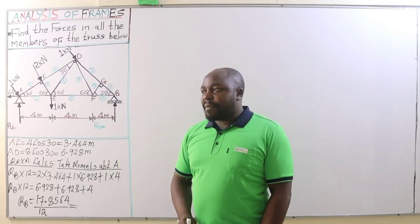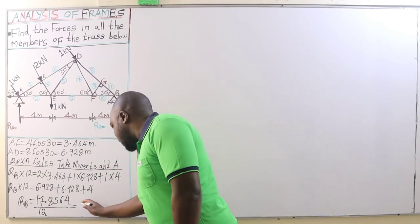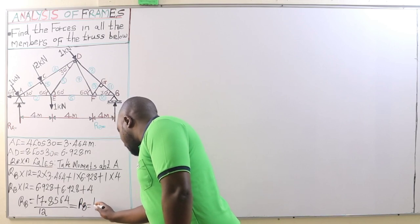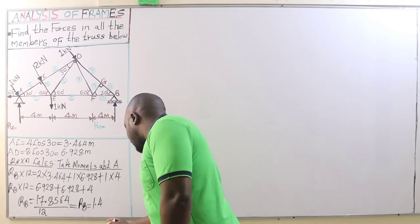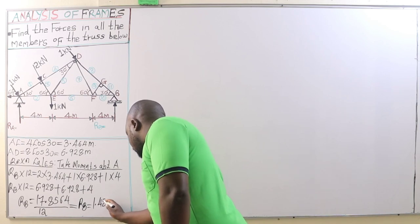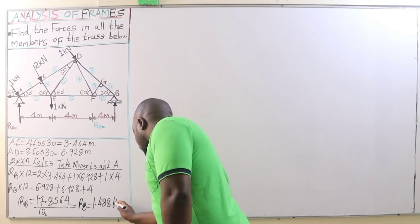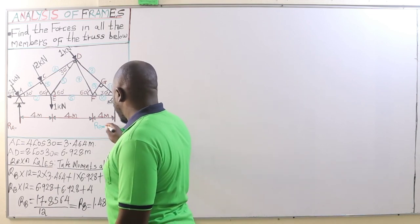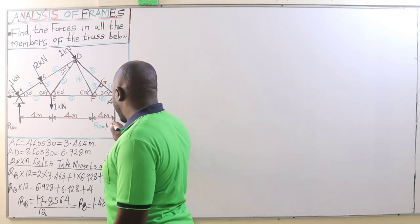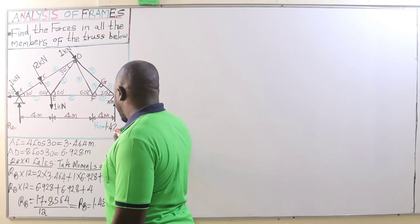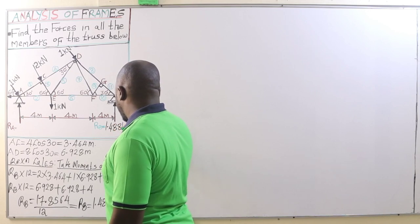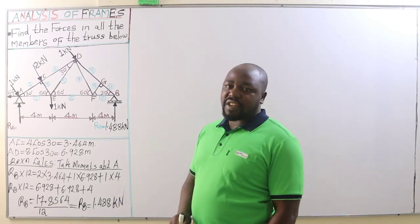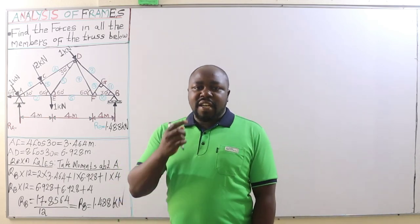Therefore the reaction at B is 17.8564 divided by 12, giving RB = 1.488 kN.